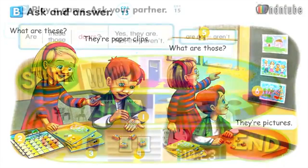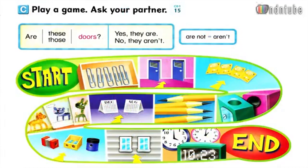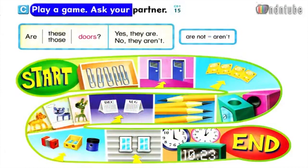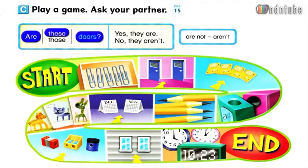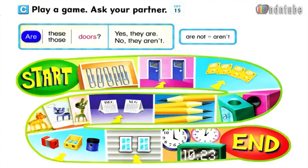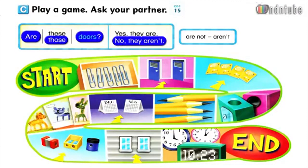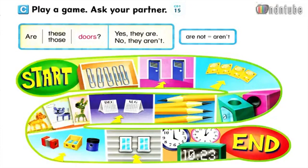Page 9. Play a game. Ask your partner: Are these doors? Yes, they are. Are those doors? No, they aren't. Are not. Aren't.